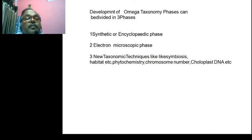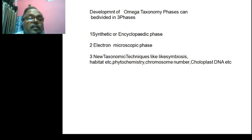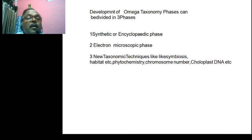These new techniques include symbiosis, habitat, phytochemistry, chromosome number, and even chloroplast DNA. In this way, this is the modern tools which are called classification or a system, which is basically omega taxonomic.